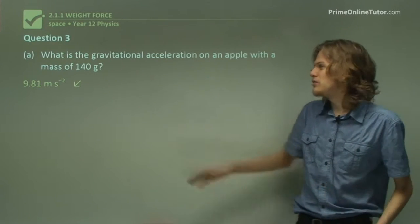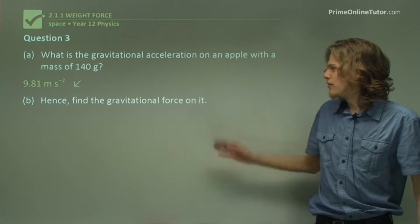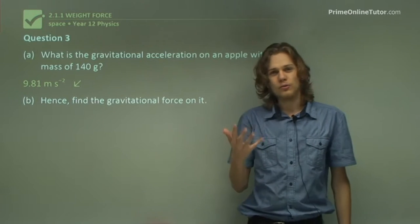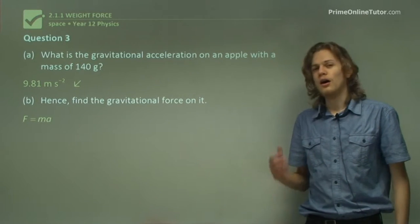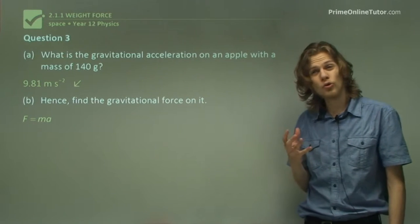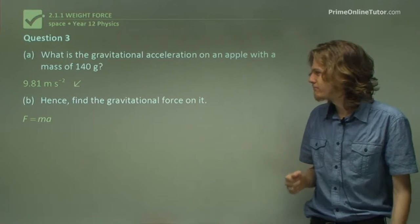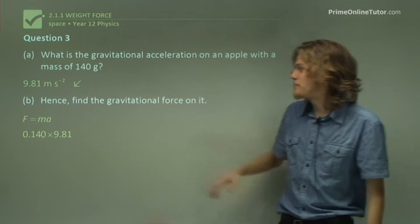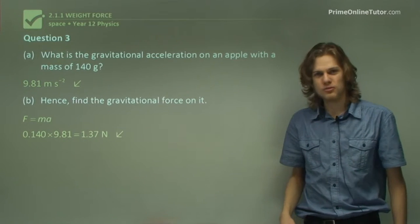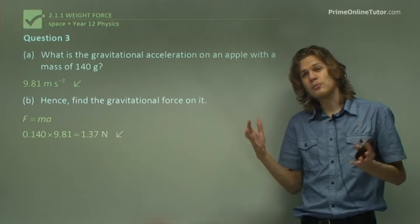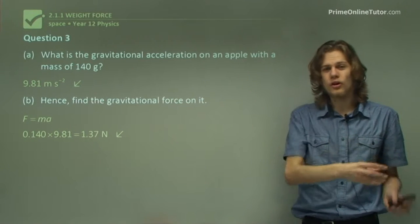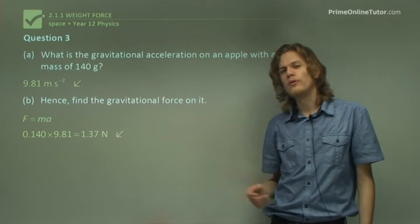So part B will be using this bit of information that we have. Find the gravitational force on the apple. So we know that F equals ma, right? We have the a and we have the m. So we should be able to calculate the F causing the a. We can do that just by multiplying the mass by the acceleration, which will give us an answer of 1.37 newtons, which means that the apple has a weight of 1.37 newtons, or it's being pushed toward the center of the Earth with a force of 1.37 newtons.